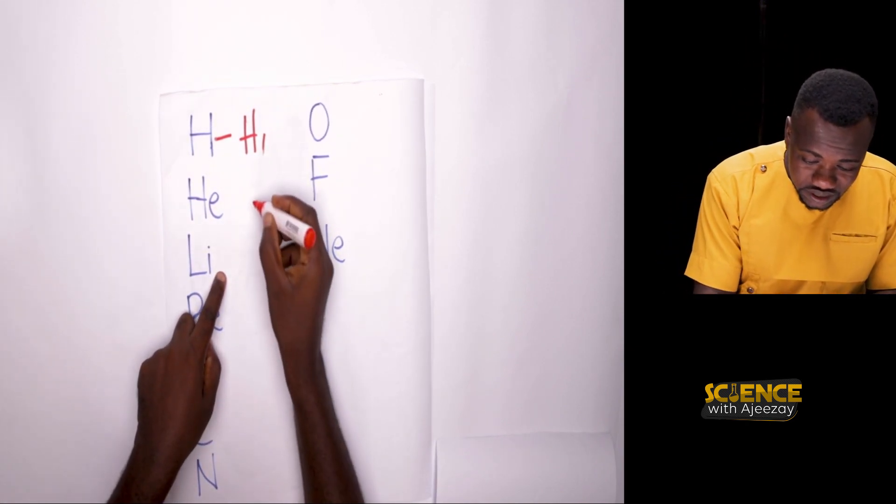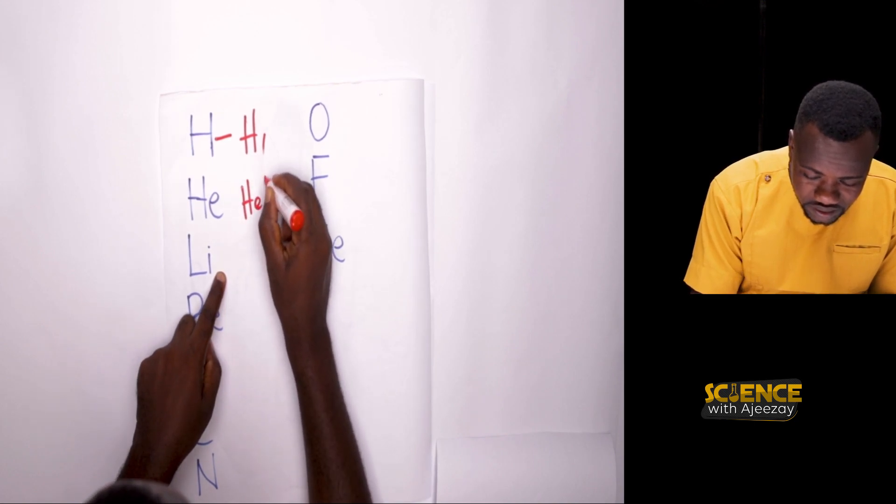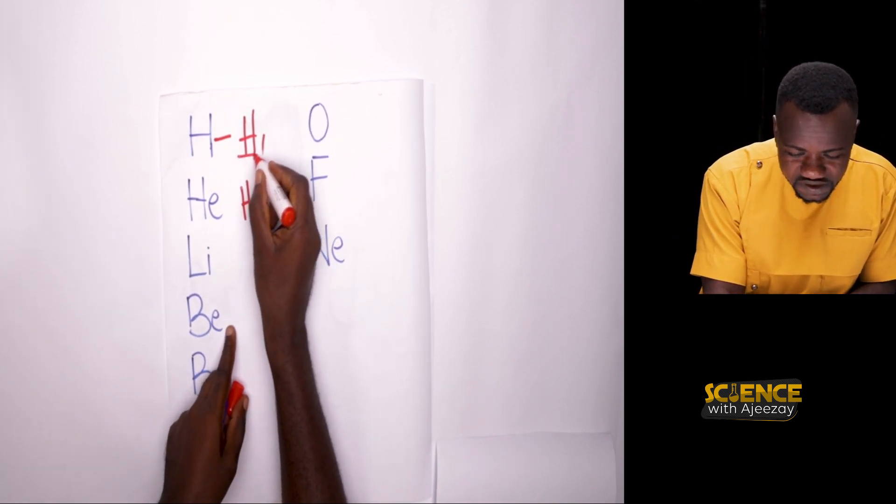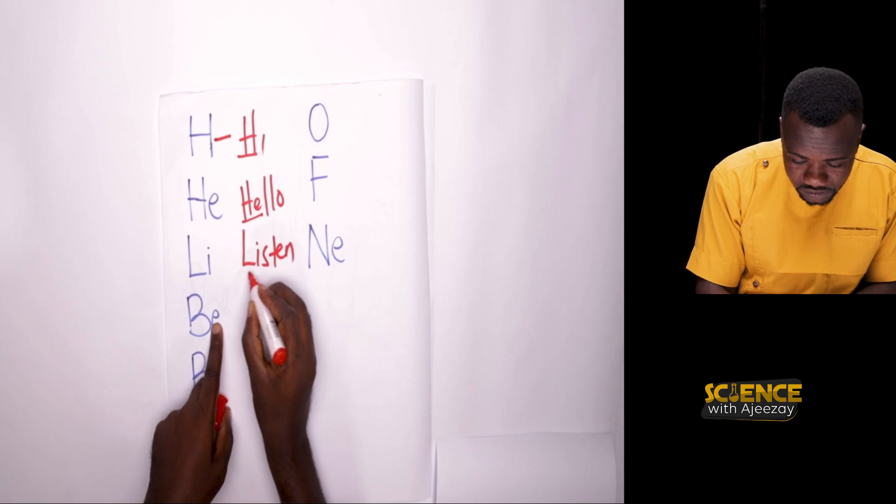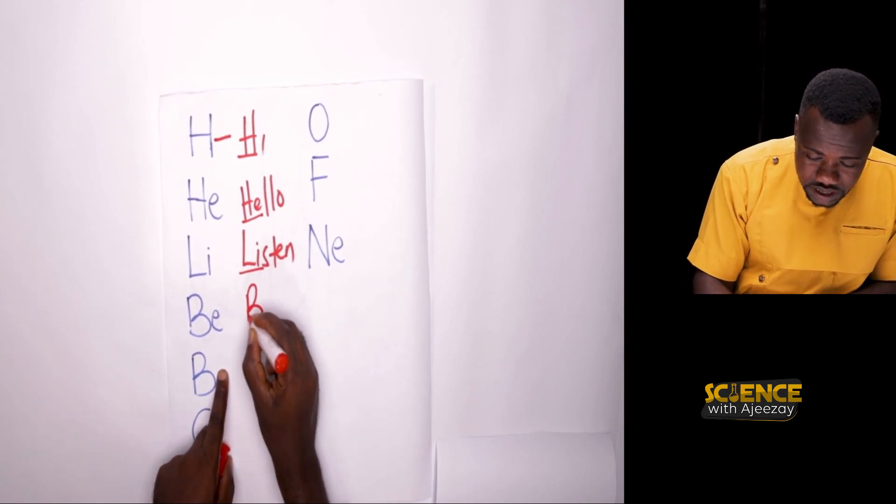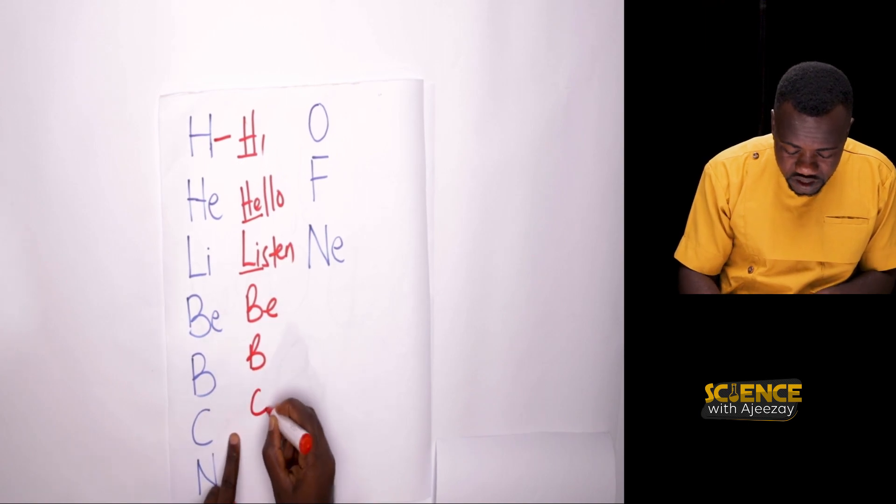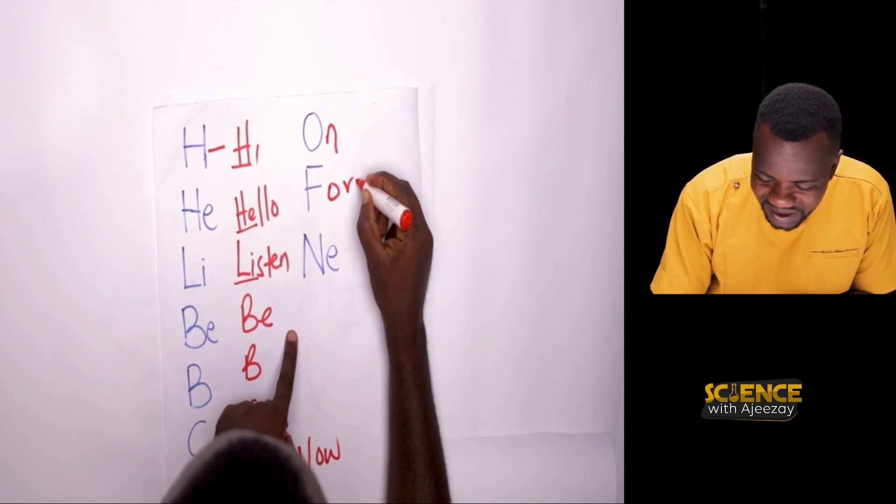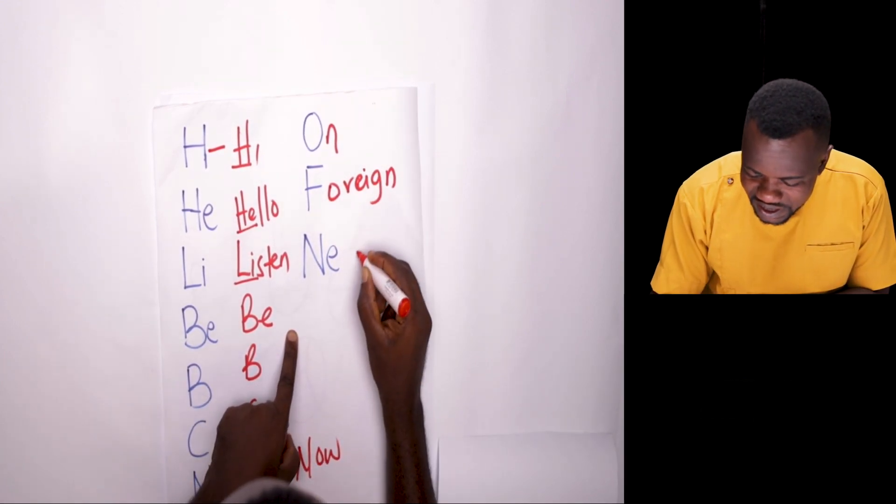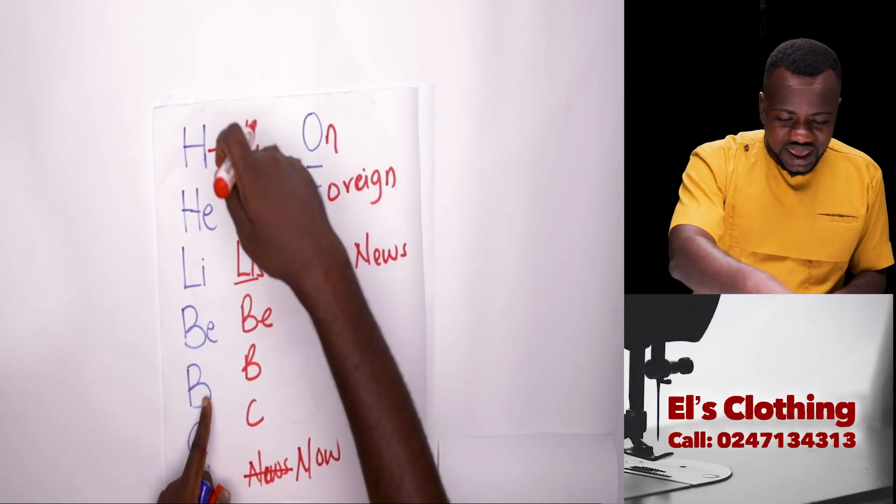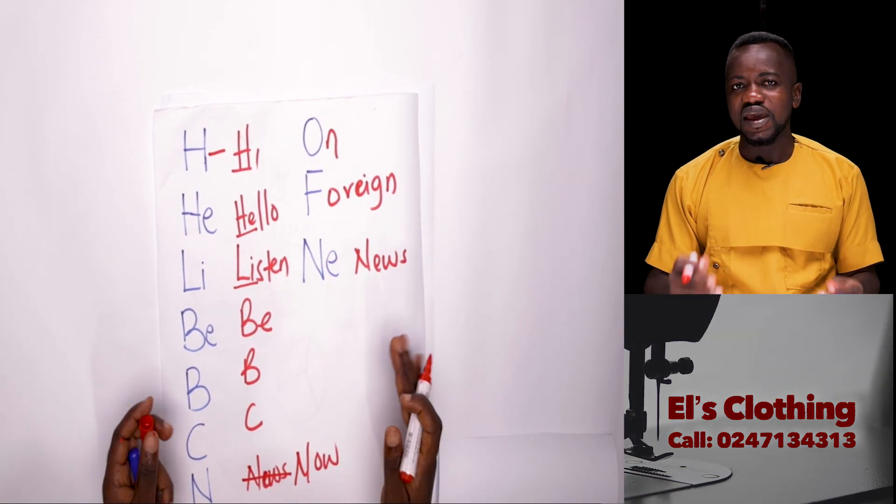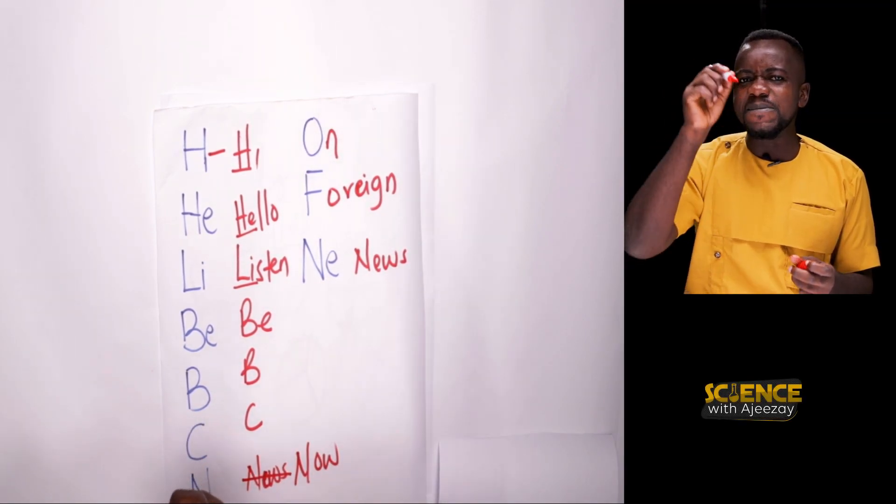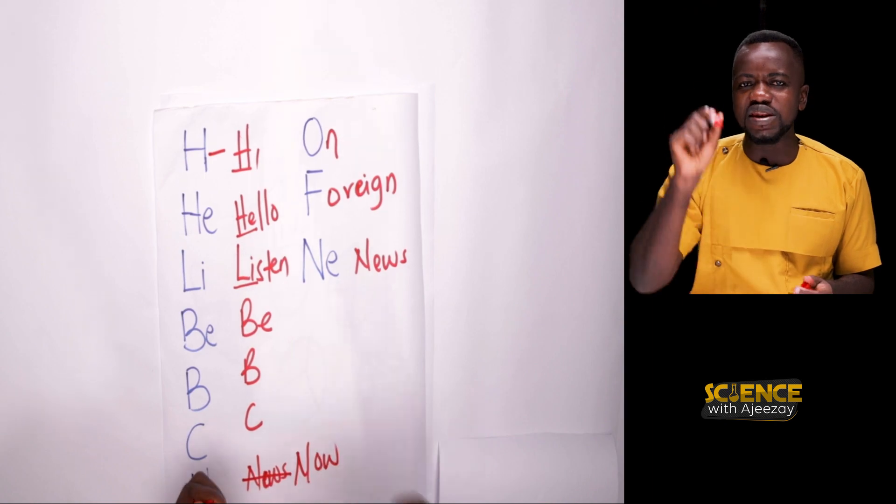So let's just use this one. Hydrogen, so hydrogen: Hi. Helium: Hello. So with the first letter H, second is helium. Lithium: Listen. Beryllium, Boron, Carbon: BBC. Nitrogen, Oxygen, Fluorine, Neon: Now on foreign news. So hi, hello, listen, BBC, now on foreign news. The first ten is gone.